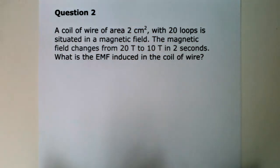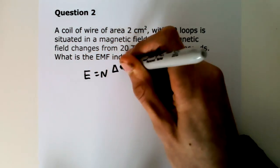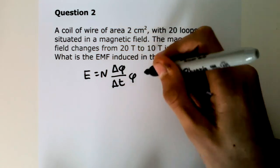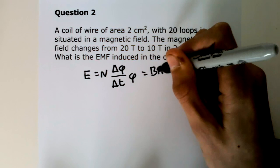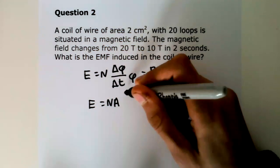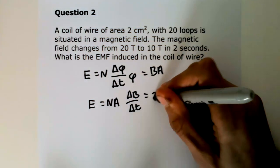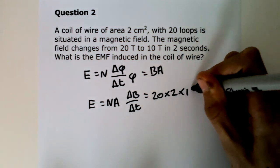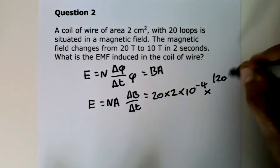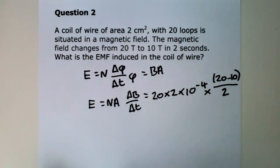So, the answer is E is equal to N times delta magnetic flux over delta t, which is equal to N times A times delta B over delta t, which is equal to 20 times 2 times 10 to the minus 4, which is equal to 0.02 volts.